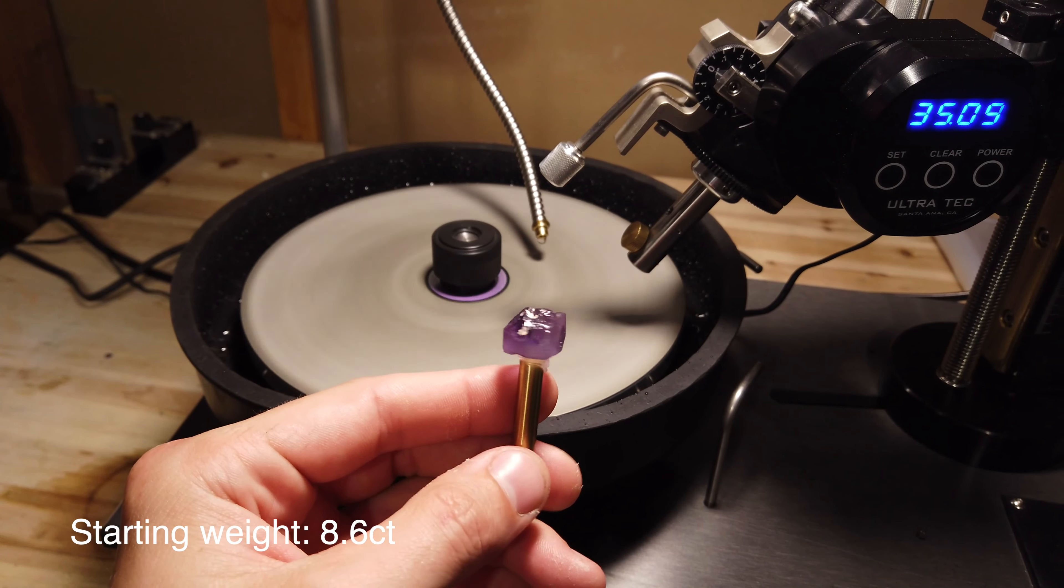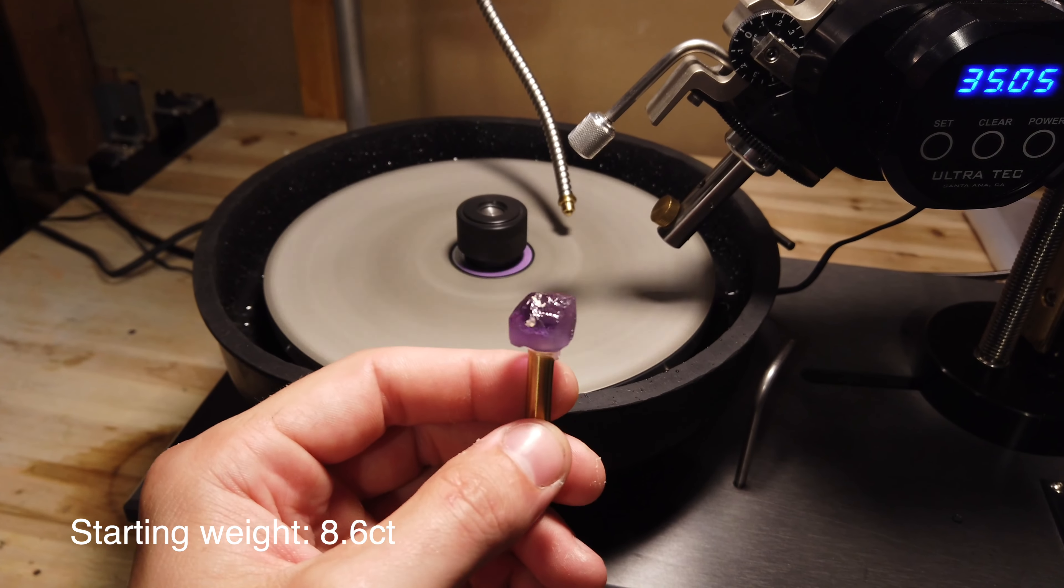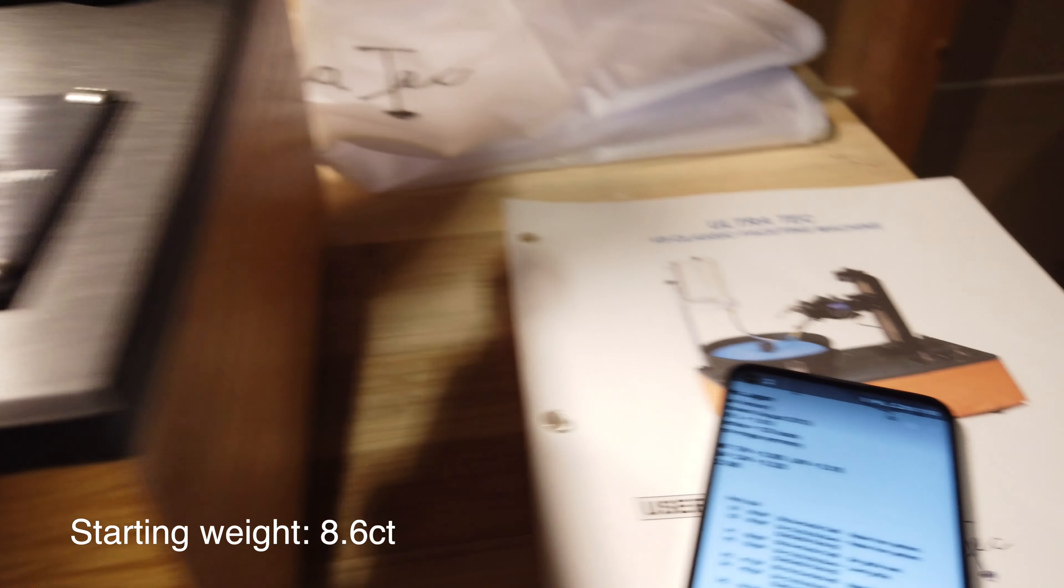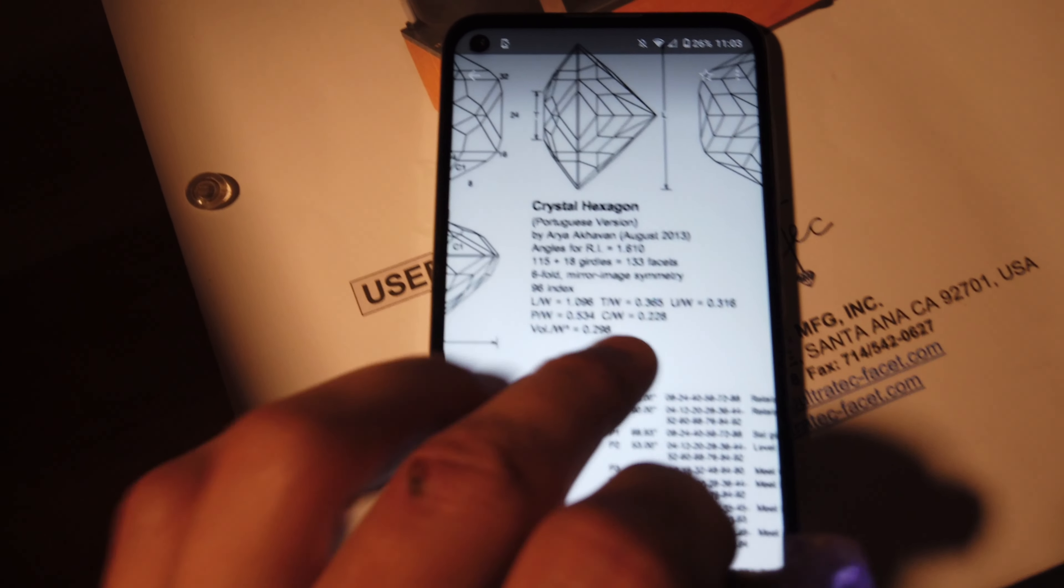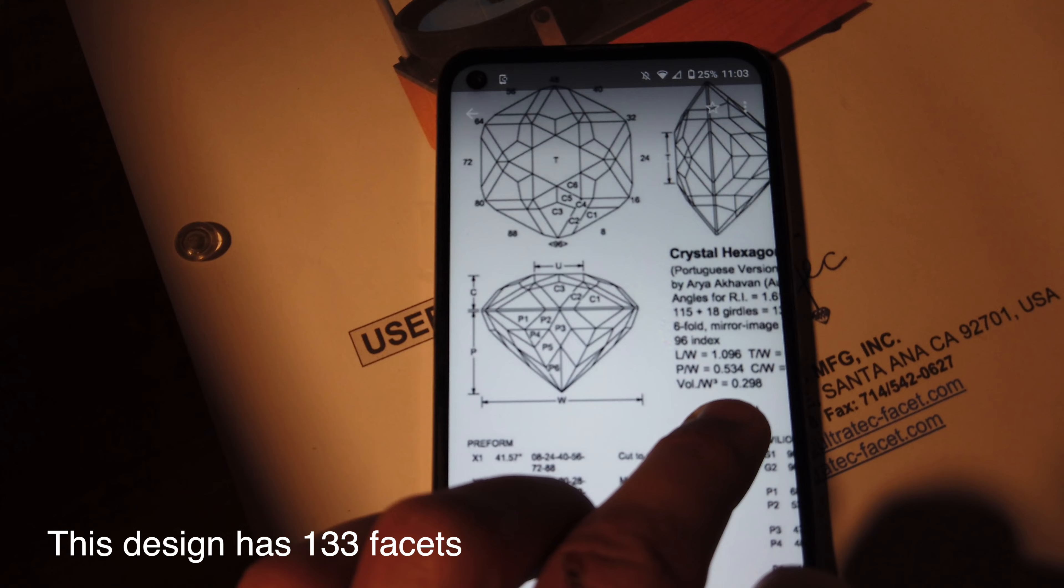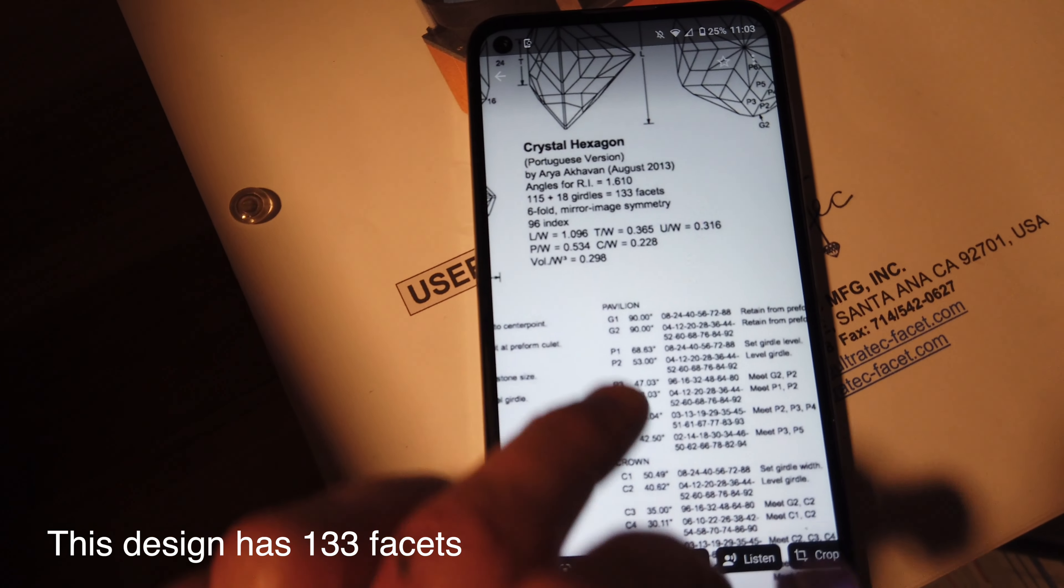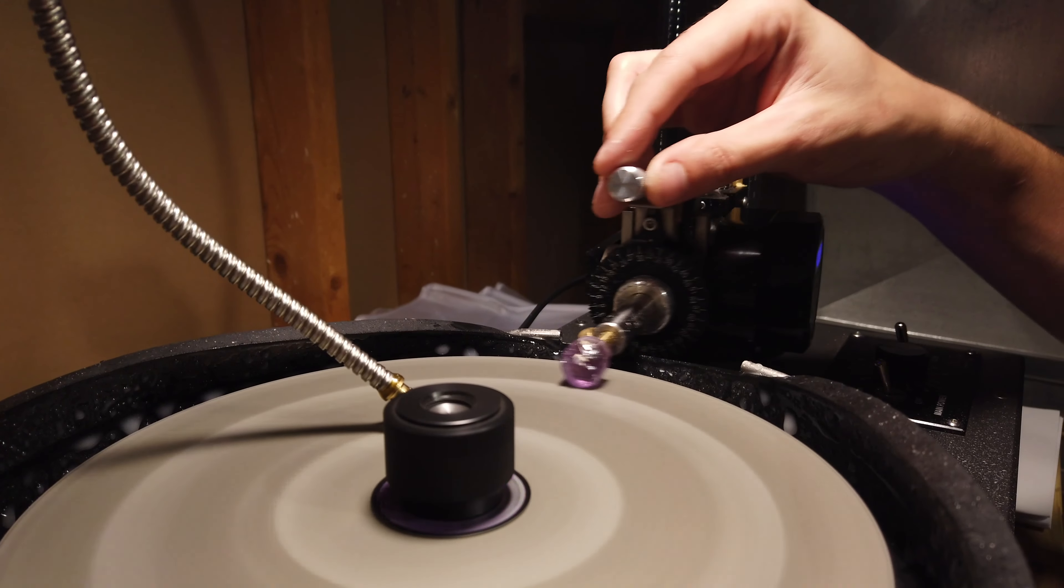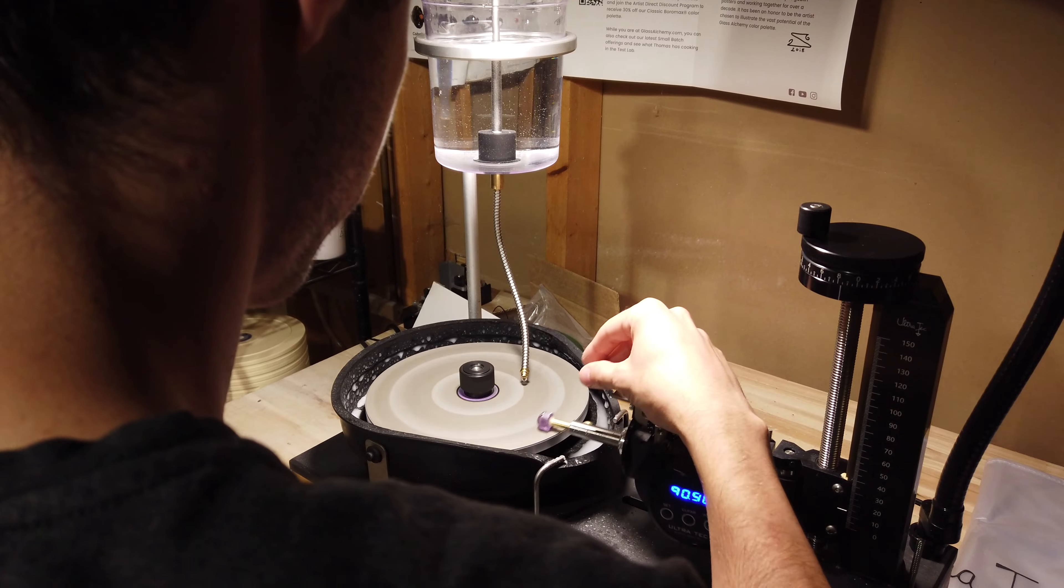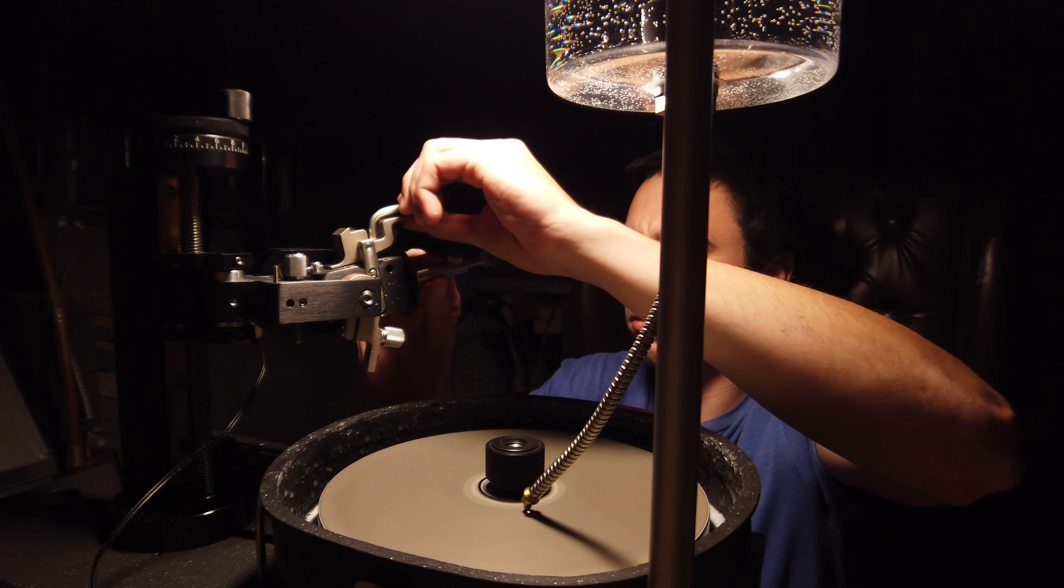The first thing I'm gonna do on this V5 is try it out. I got a piece of amethyst dopped up. Started on the preform. What I'm gonna be doing here is called the Crystal Hexagon. Pretty intense actually so this will be my most complex cut I've ever done. Just got this in the quill and we're working on the preform. Just gonna get some of the rough edges ground away.